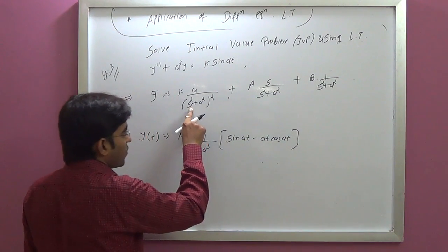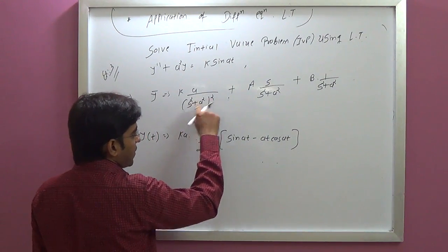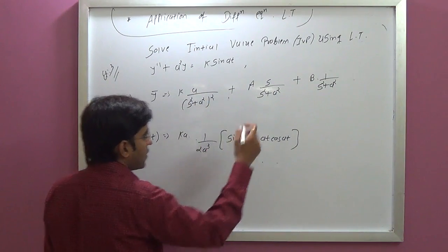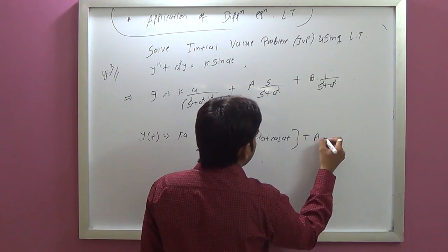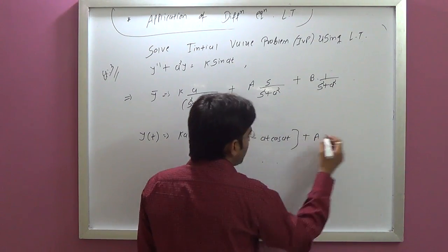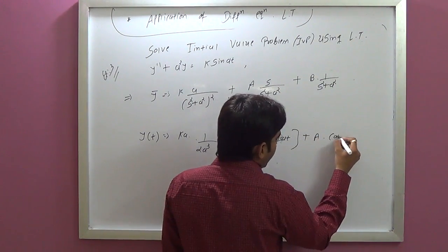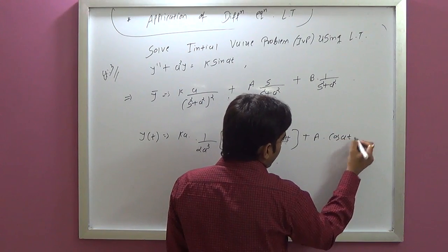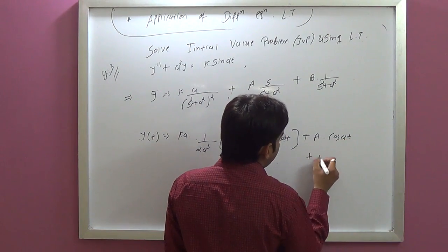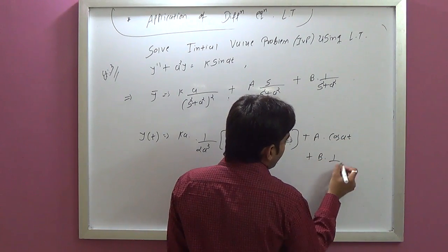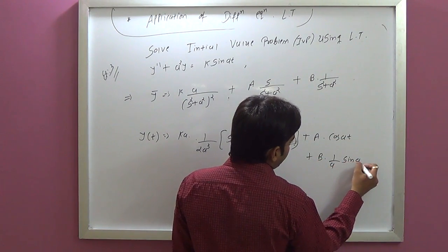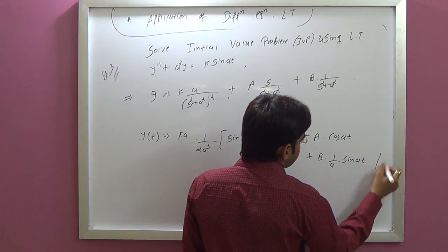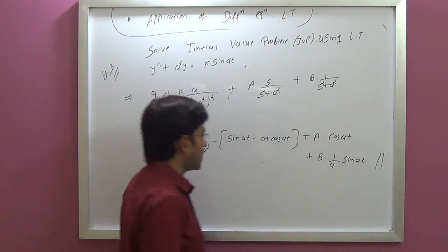The inverse of 1 over (s-squared plus a-squared) squared uses another formula. Plus a times cos(at), plus b times (1/a)·sin(at). This is your final answer.